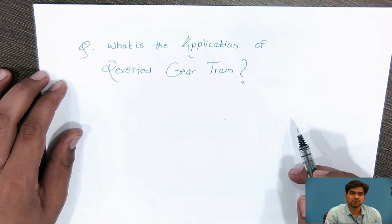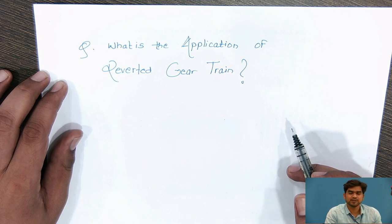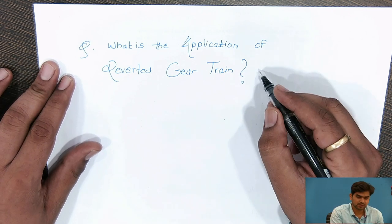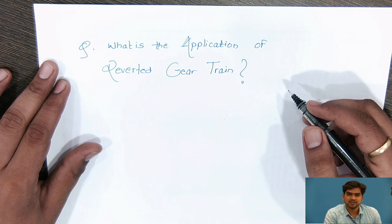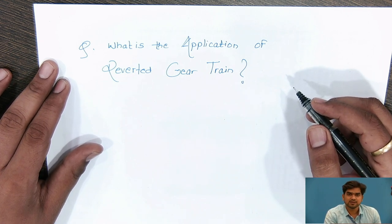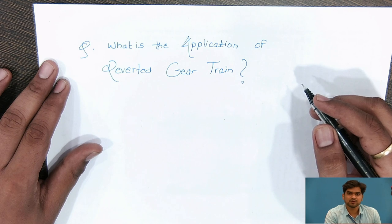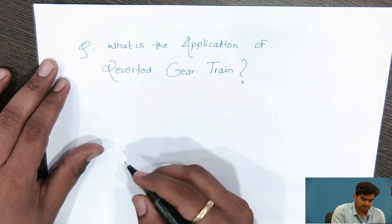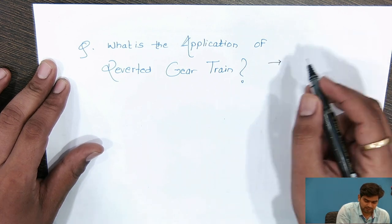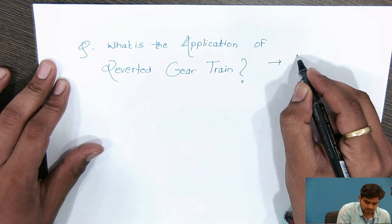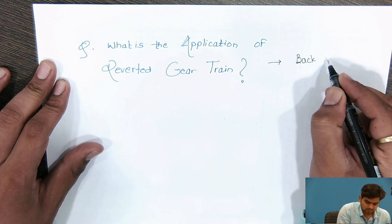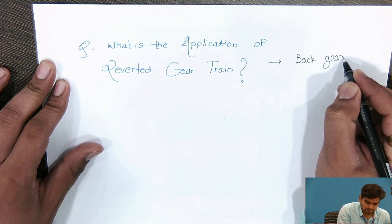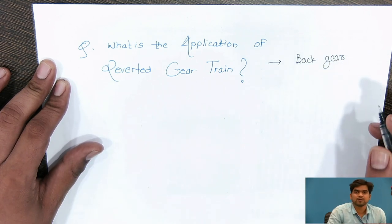Consider what the applications of a reverted gear train are. Generally, if you observe the lathe machine, at the back gear box of the lathe machine we use the reverted gear train. So the main application is the back gear of a lathe machine.